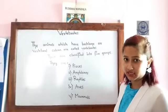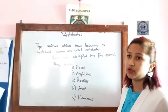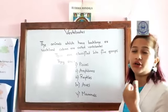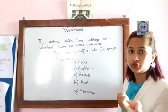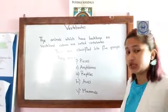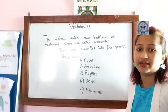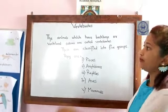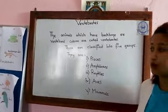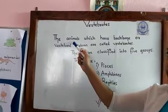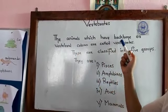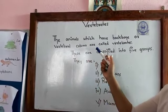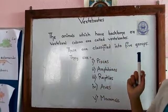Let's see what we mean by vertebrates. As I said, you can touch from your neck down and find the bone — that is the vertebral column. So the definition of vertebrates is: animals which have a backbone are called vertebrates.